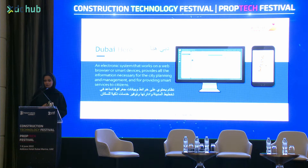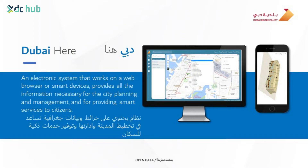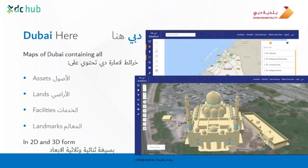What is our platform for the Digital Twin? It is called Dubai Here. We named it that because we mean we have all of what is available in Dubai here in one platform. It can present both 2D and 3D data. It has information on assets, buildings, services, facilities, underground utilities — everything you can see on the ground, you can see it in Dubai Here.